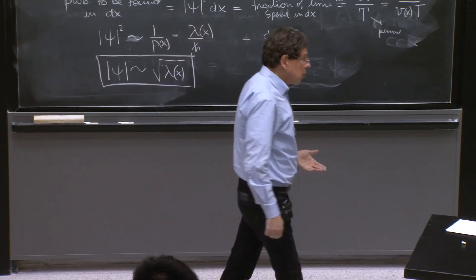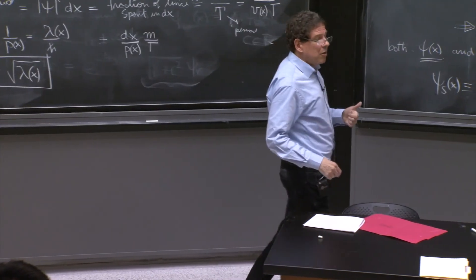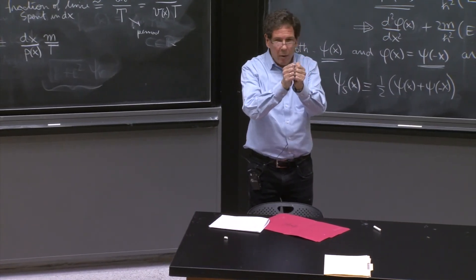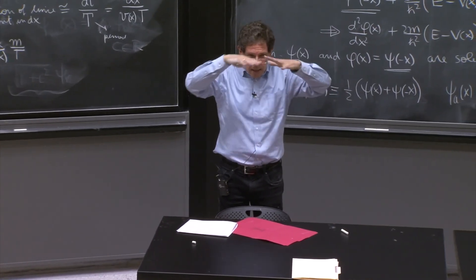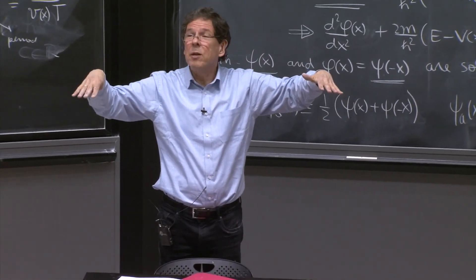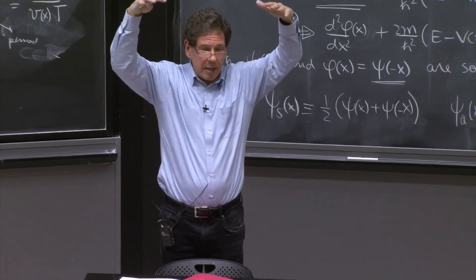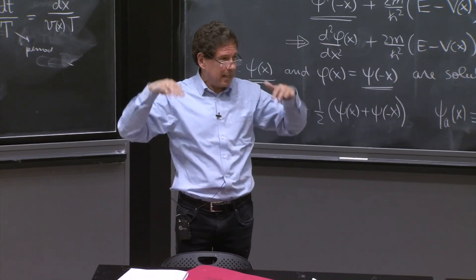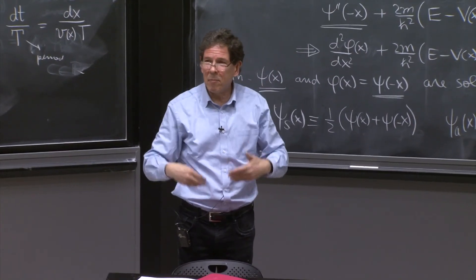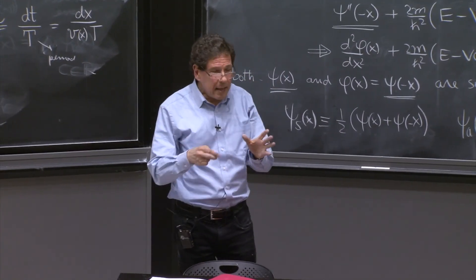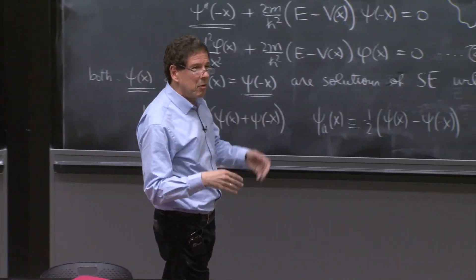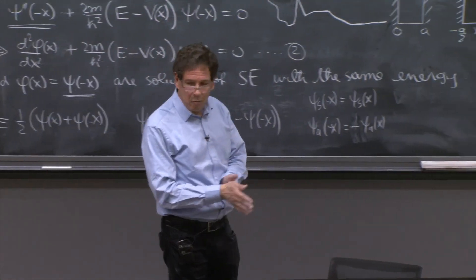What else do you know? There's the node theorem, mentioned again in the case of the square well. The ground bound state has no nodes. The first excited state has one node, the next has two nodes, then three, and the number of nodes increases. With that information, it becomes plausible that you can sketch a general wave function.